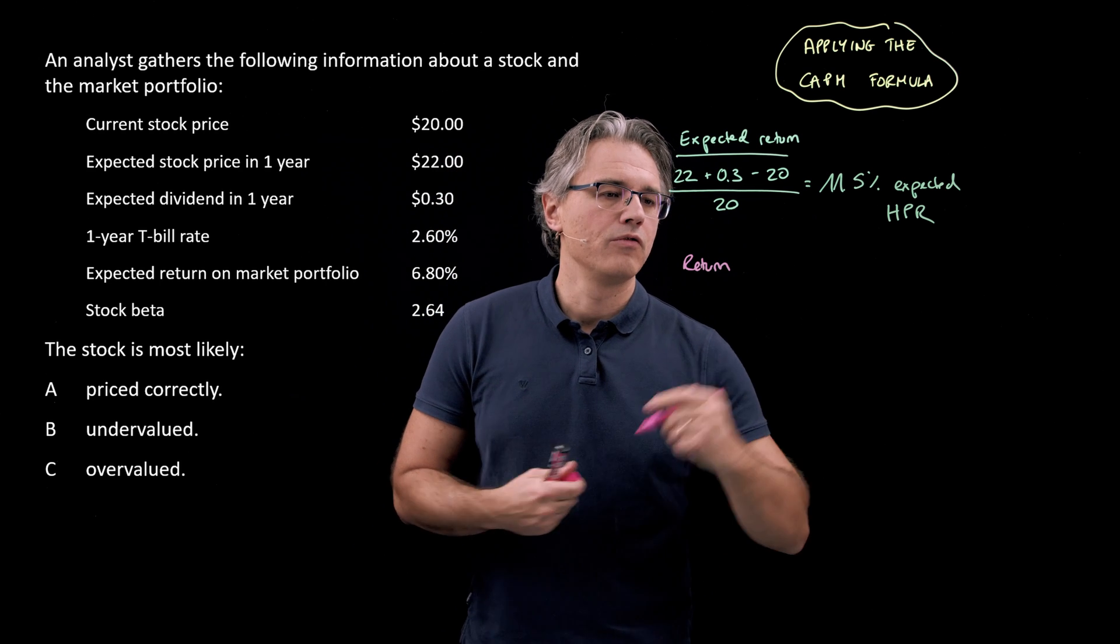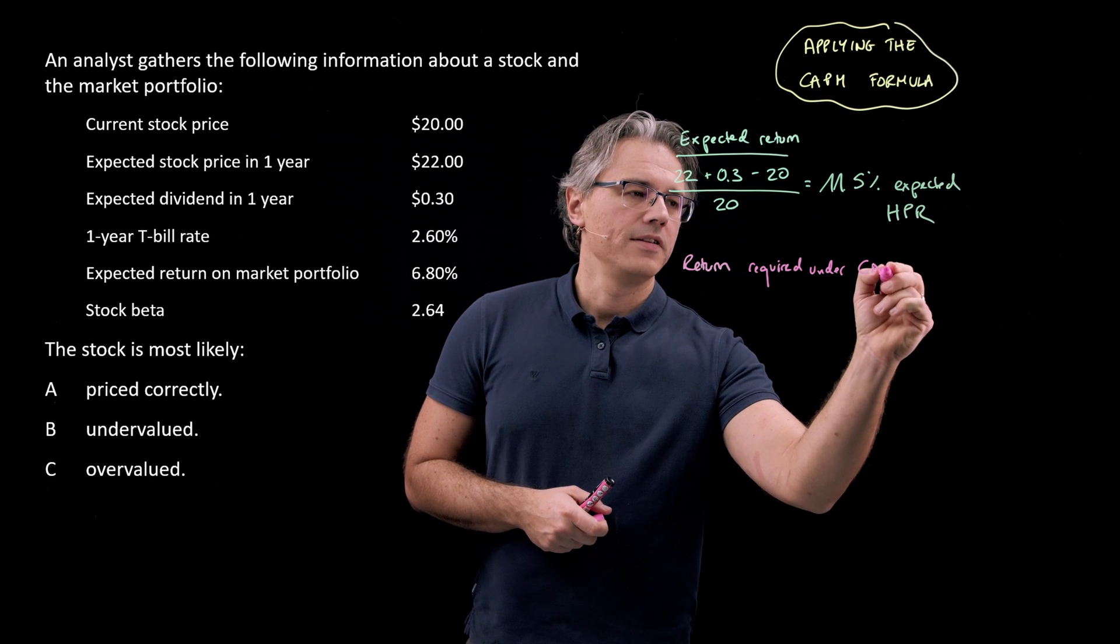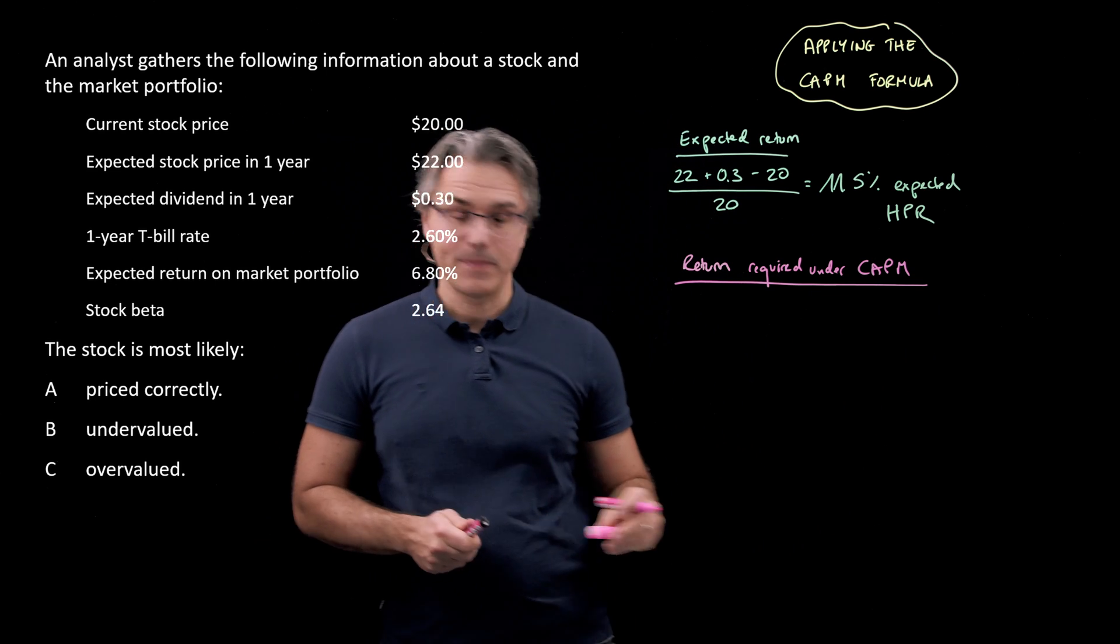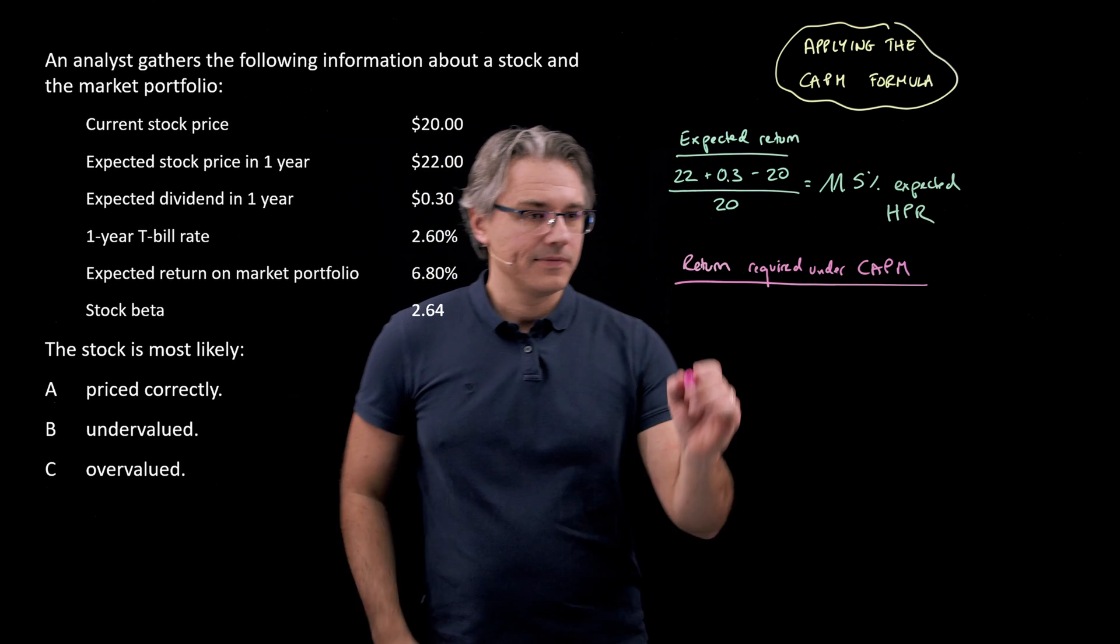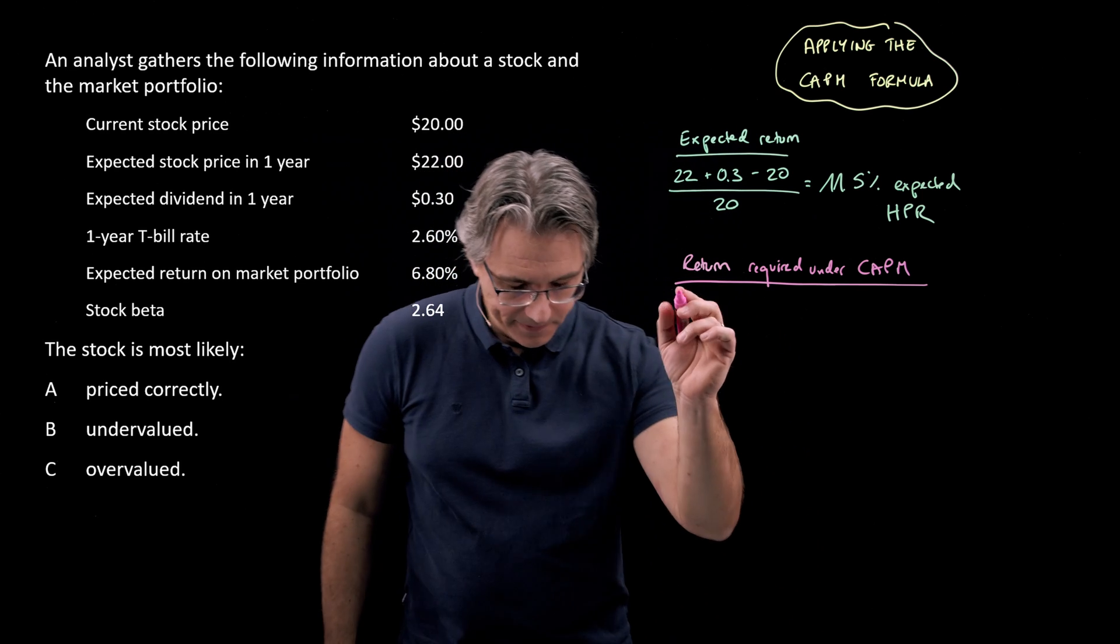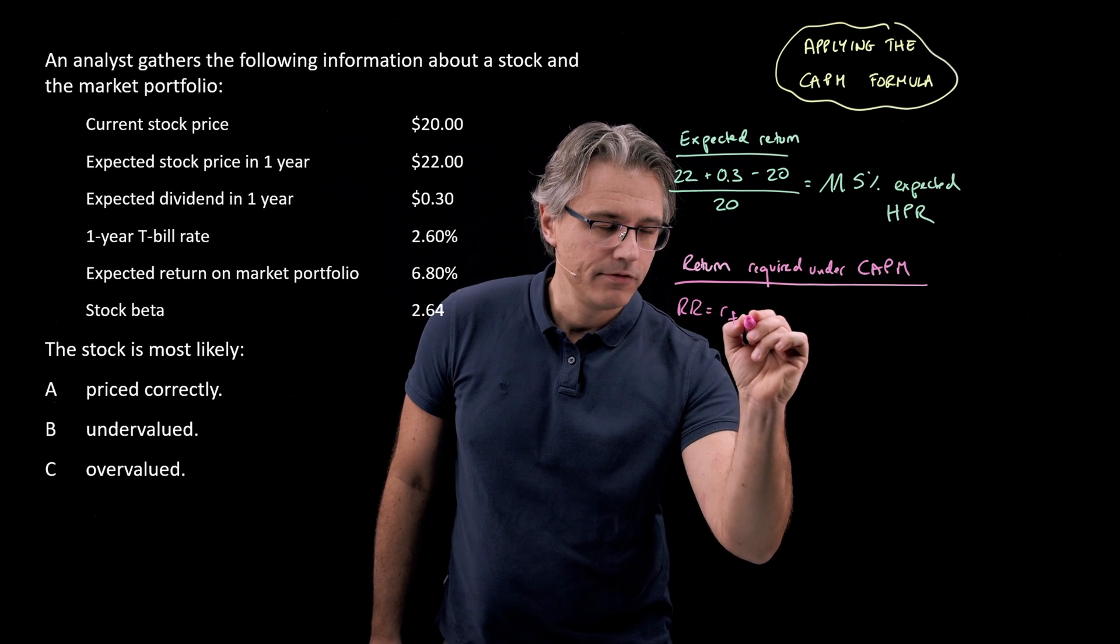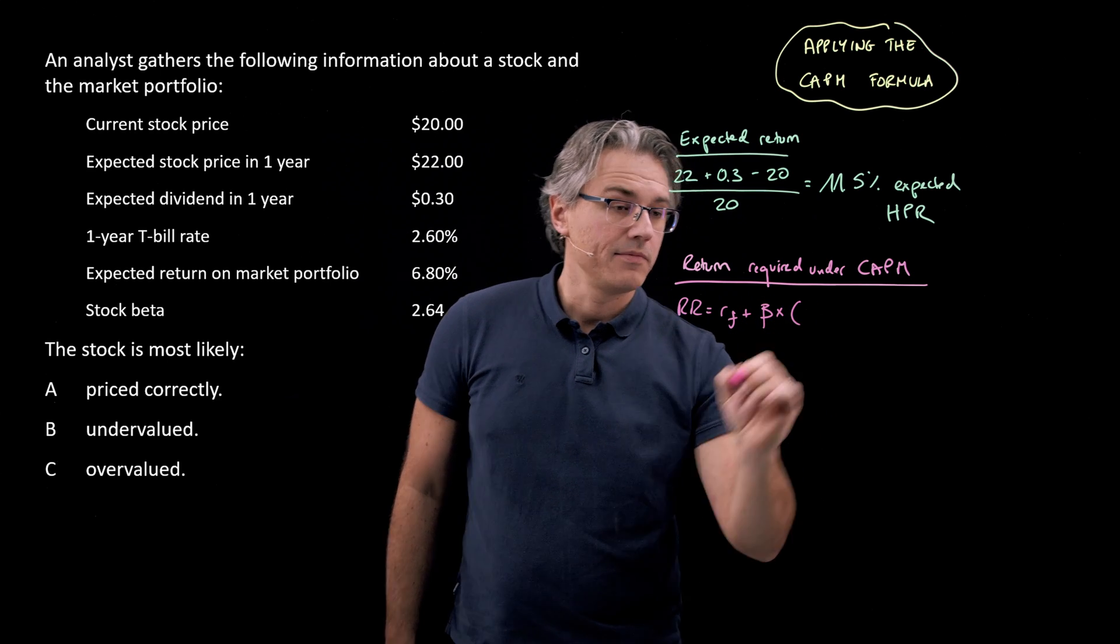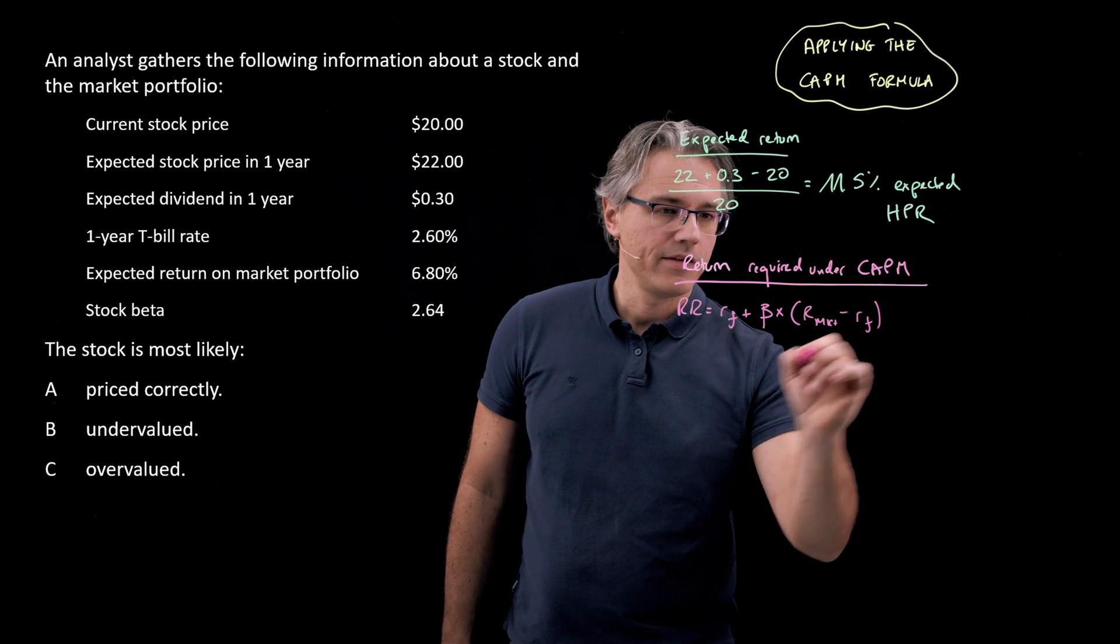Let me change pens. Return required under CAPM. Under the capital asset pricing model, which takes into account the level of systematic risk exposure that this stock generates, the required return is equal to RF, the risk-free rate of return, plus beta times the level of return expected from the market portfolio minus RF.